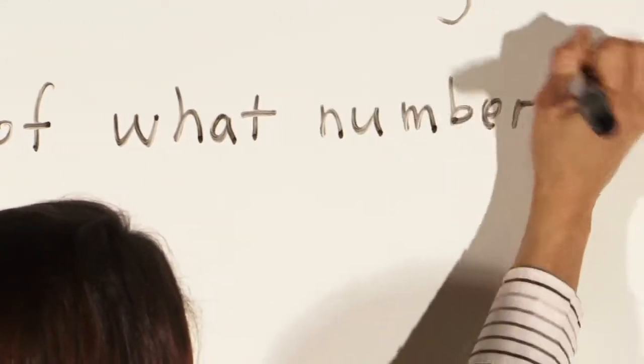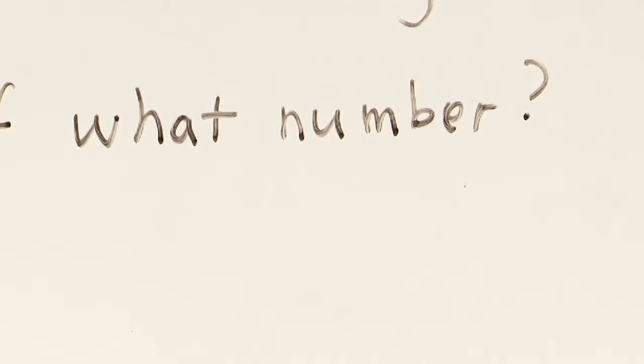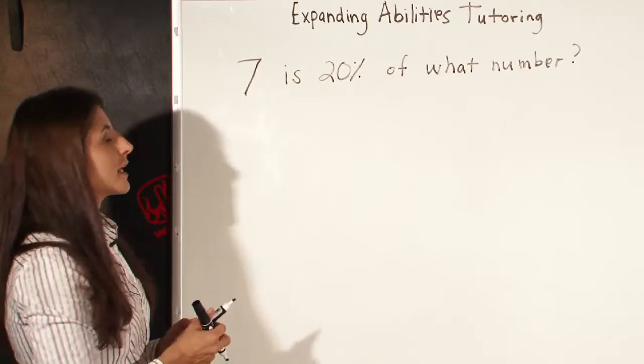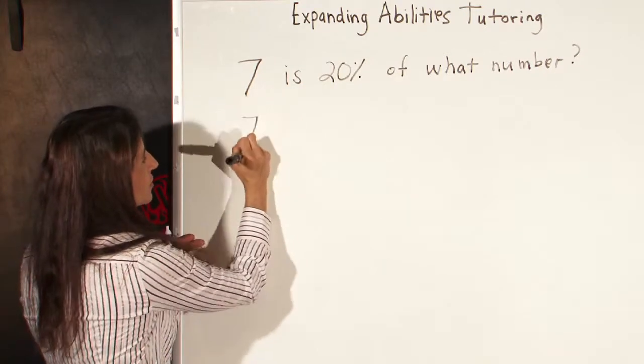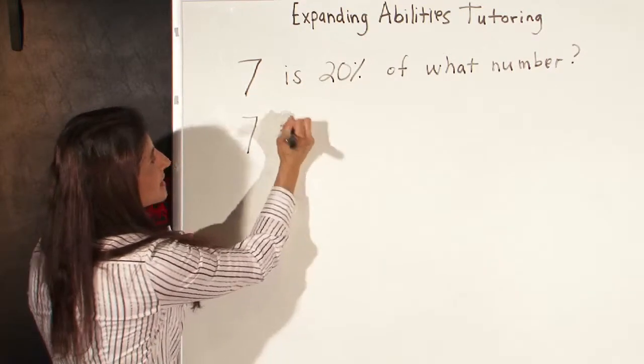The third type of percentage problem is one like this: Seven is 20 percent of what number? And we're going to translate this again into an algebraic equation. Seven, the number just comes down. Is again is equals.